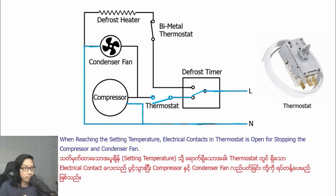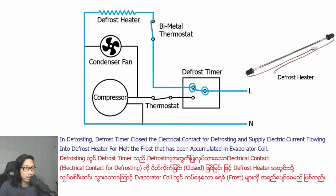When the set temperature is reached, the electrical contact in the thermostat opens, stopping the compressor and condenser fan. In defrosting mode, the defrost timer closes the electrical contact for defrosting and supplies electric current to the defrost heaters to melt frost.